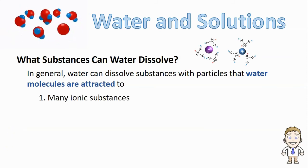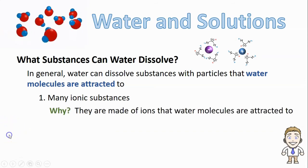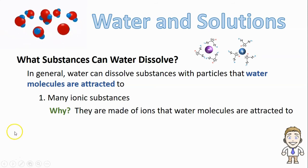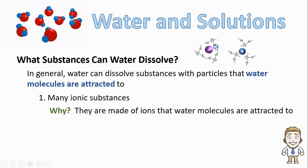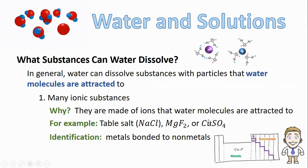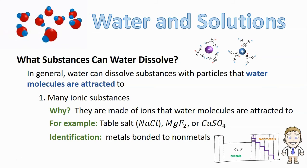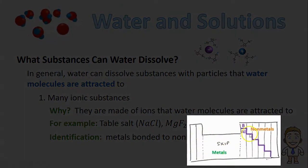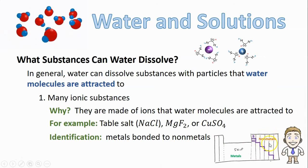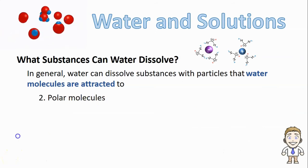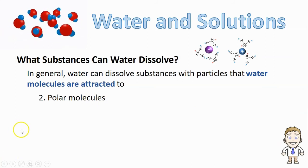First on the list: many different ionic substances are soluble in water. Why? Same reason we saw with sodium chloride — ionic substances are made of ions, so water molecules would be attracted to them in the same way. Examples include table salt (sodium chloride), MgF₂, or CuSO₄. To identify ionic substances, you're looking for metals bonded to non-metals — metals on the left side of the periodic table beneath the staircase, non-metals on the right-hand side above the staircase. Any substance made of those types of atoms is ionic and will probably be soluble in water.